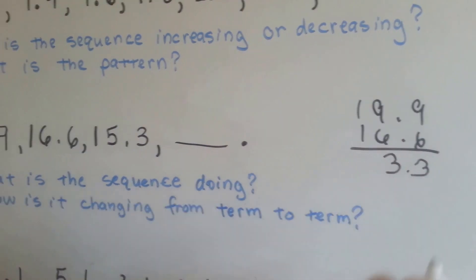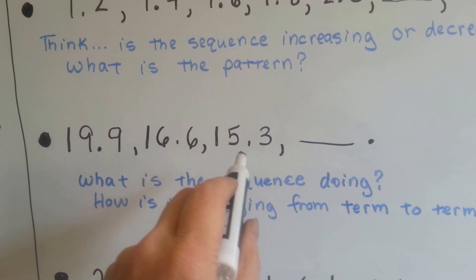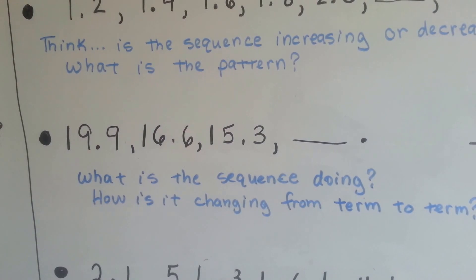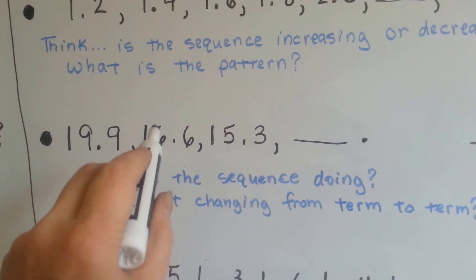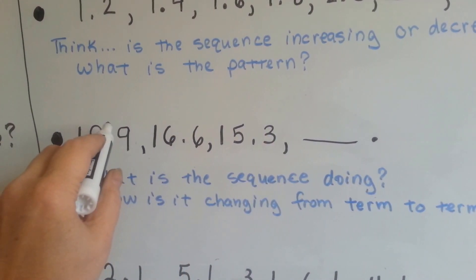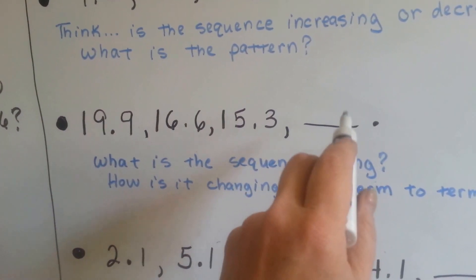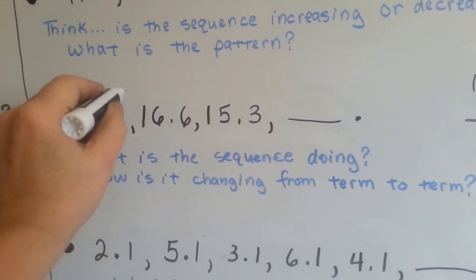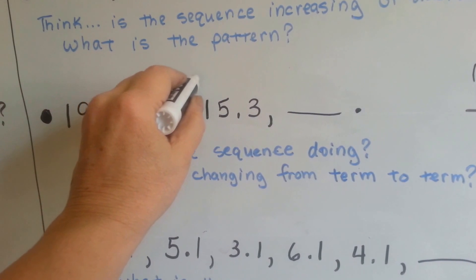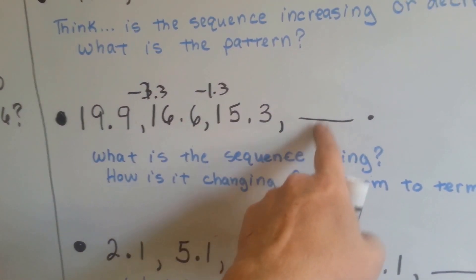It dropped by 3 and 3 tenths. Now look, it dropped to 15 and 3 tenths. So it dropped by 1 and 3 tenths. So it did 3 and 3 tenths and then it dropped to 1 and 3 tenths. Would you be able to answer this one? Minus 3 and 3 tenths and then minus 1 and 3 tenths. So the question is, would you be able to answer this next one?